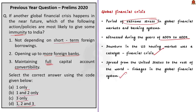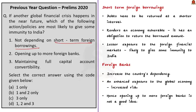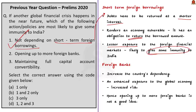Considering the statements one by one: short-term debt must be returned at shorter intervals, rendering an economy vulnerable during a crisis. The ideal scenario is not to depend on short-term debt during a crisis, and lesser exposure to foreign financial markets is likely to give India some immunity. Hence, statement 1 is correct. Opening up to more foreign banks increases the country's dependency on foreign banks and leads to enhanced exposure to the global economy, with increased associated risk. Hence, statement 2 is incorrect; eliminate it.